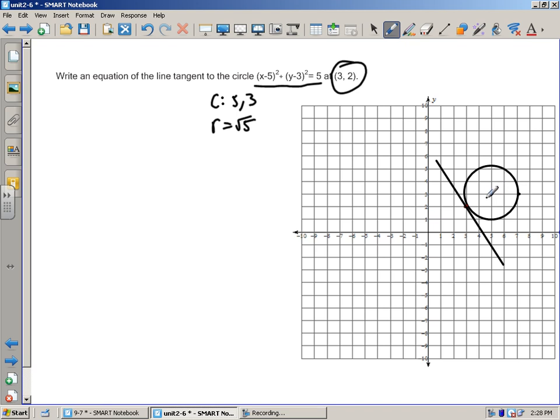What I'm going to do is first of all I need to know what's the slope of the radius, so what's the slope right here. To find that out I use the slope formula which basically says that I have y2 minus y1 over x2 minus x1.